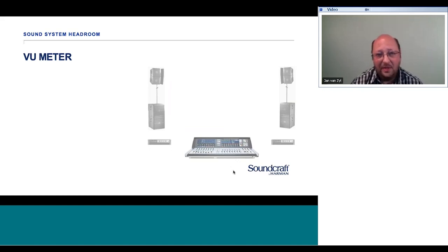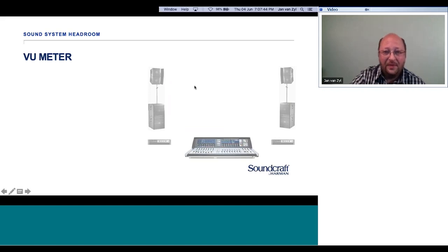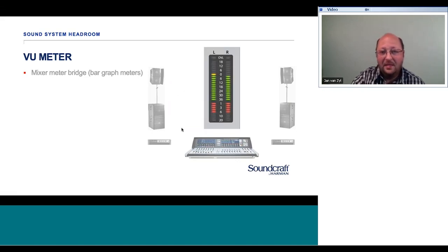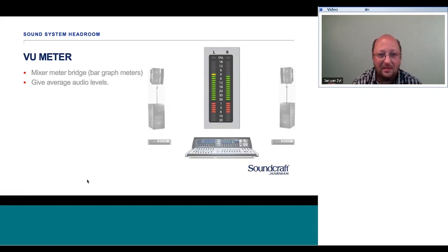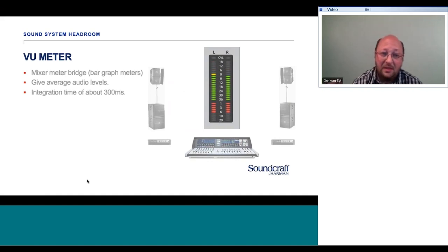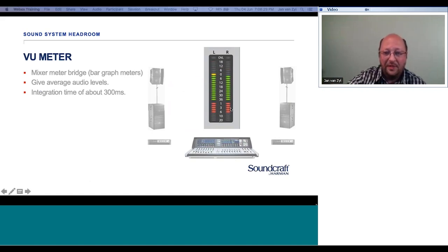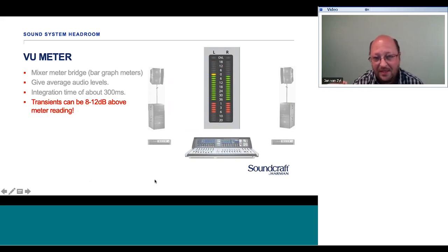The VU meter — what we have on the mixer to show actual levels — is also referred to as the mixer meter bridge. These LEDs show us how loud we're mixing the show, but it's important to understand the nature of VU meters: they only give us an average audio level, with an integration time of roughly 300 milliseconds. What we see on the meter bridge is an average of the last 300ms, so split-second transients — those peaks — won't appear on the VU meter.